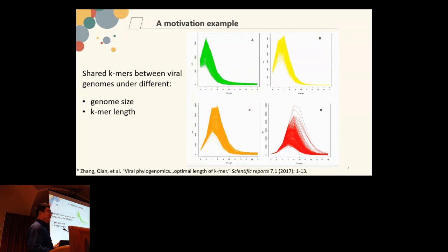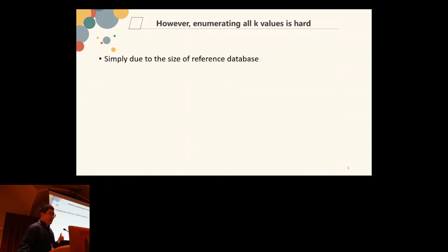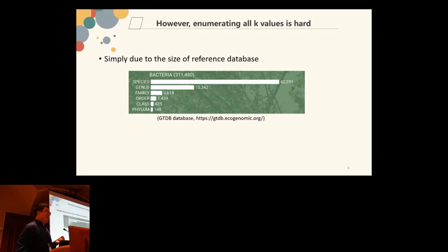However, this story is not always so simple when we come to microbiomes, because enumerating all k-values in the bacterial field is very challenging, simply due to the size of the reference database. For example, this shows the available genomes in the GTDB database — a very popular database for studying microbiomes — with more than 300,000 available genomes consisting of several hundred gigabytes of sequencing data. This makes it very hard to enumerate all k-mers in practice.